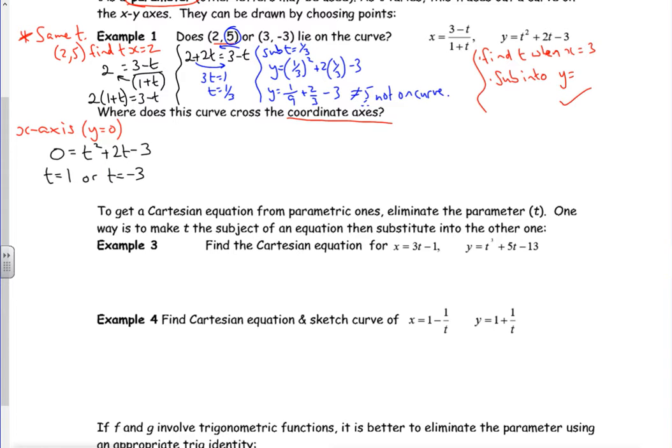Right. Now then, I need the x value that goes with it. So now I'm going to sub into x equals. So for t is 1, x would be (3-1) is 2, (1+1) is 2, so x is 1. So I've got a coordinate of (1, 0).